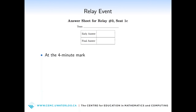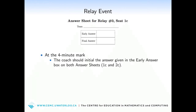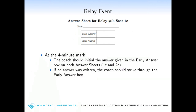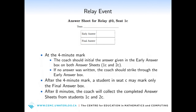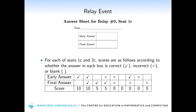At the 4-minute mark, the coach should initial the answer given in the early answer box on both answer forms, 1C and 2C. If no answer was written, the coach should strike through the early answer box. After the 4-minute mark, a student in seat C may mark only the final answer box. After 8 minutes, the coach will collect the completed answer sheets from students 1C and 2C. For each of seats 1C and 2C, scores are as follows according to whether the answer in each box is correct, incorrect, or blank. No part marks are awarded for the answers from seats A or B.